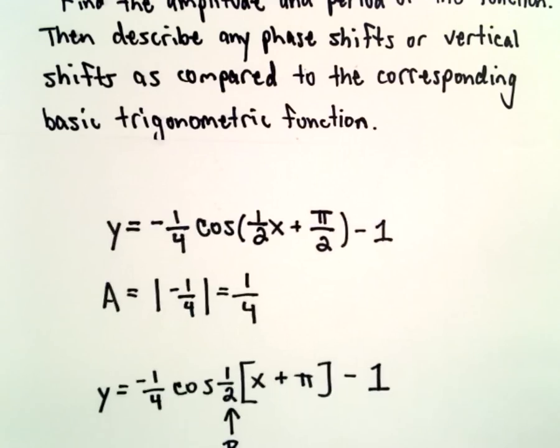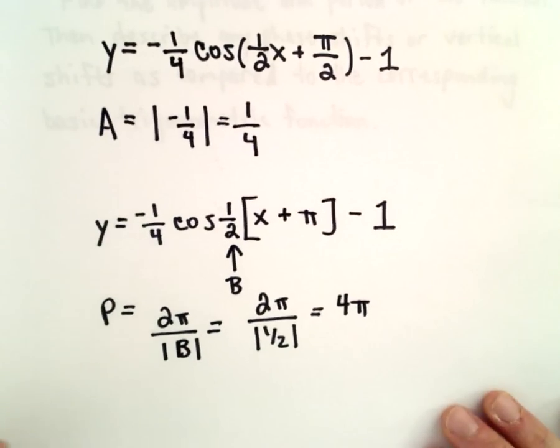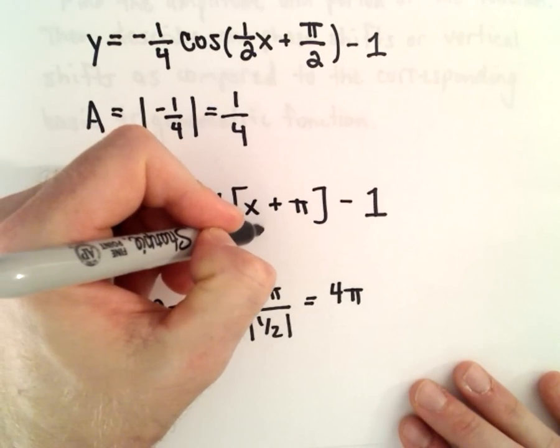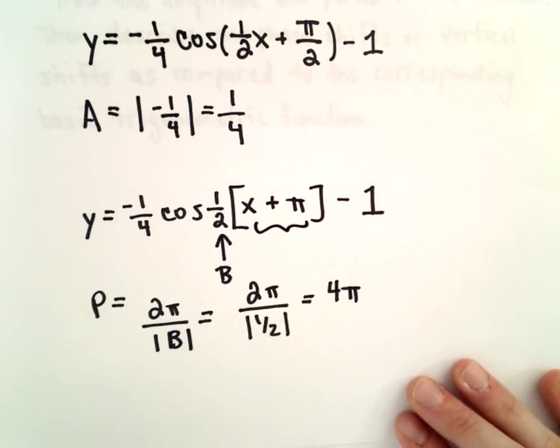What else do we want? We wanted the vertical and the horizontal or the phase shift as well. If we look inside the brackets or the parentheses, that's where we're going to get the phase shift.